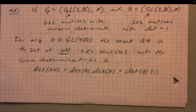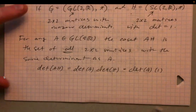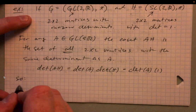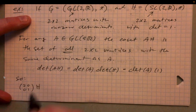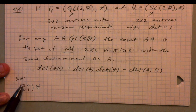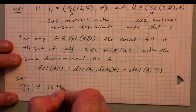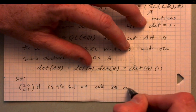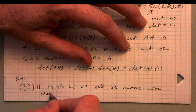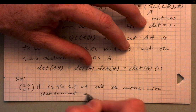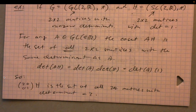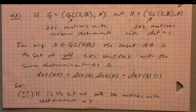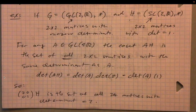A slightly more concrete example: consider the matrix A = [[2,0],[0,1]], which has determinant 2. Then the coset A·H is the set of all 2×2 matrices with determinant equal to 2. This is a very cool example of using cosets to break up a very large and complex group into something quite useful.